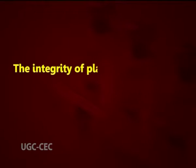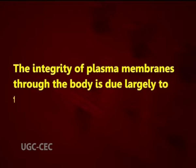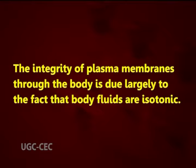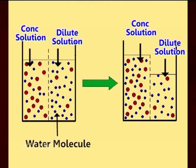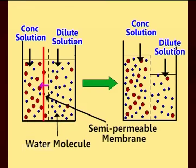Movement of these molecules occurs if the membrane is viable and undisturbed. The integrity of plasma membranes throughout the body is due largely to the fact that body fluids are isotonic. In our body, water molecules move freely through cell membranes into and out of the cell because of their small size. Water acts as a vehicle which enables ions and other molecules to move through the membrane. This movement of water molecules through a semi-permeable membrane from the side where their concentration is higher to the side where the concentration is lower is called osmosis.